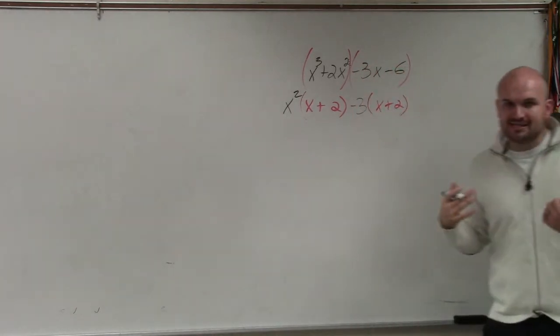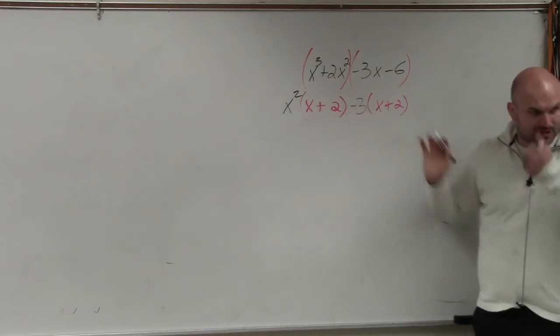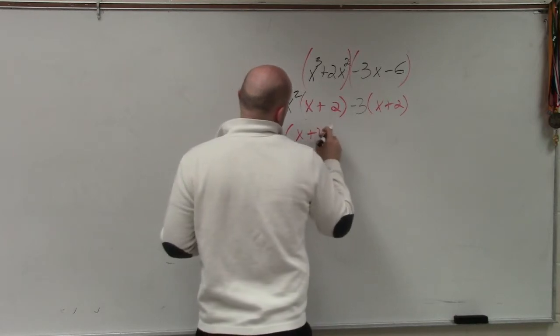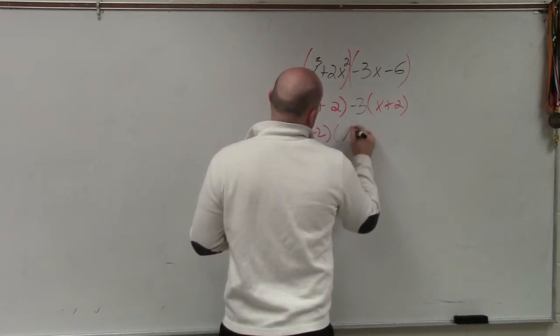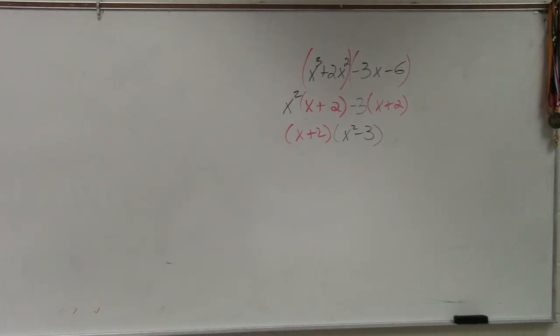Now you guys can see that these two expressions that are separated by this subtraction sign have an x plus 2 in red in common. So I factor that out. And I'm left with x squared minus 3. That is your factored form.